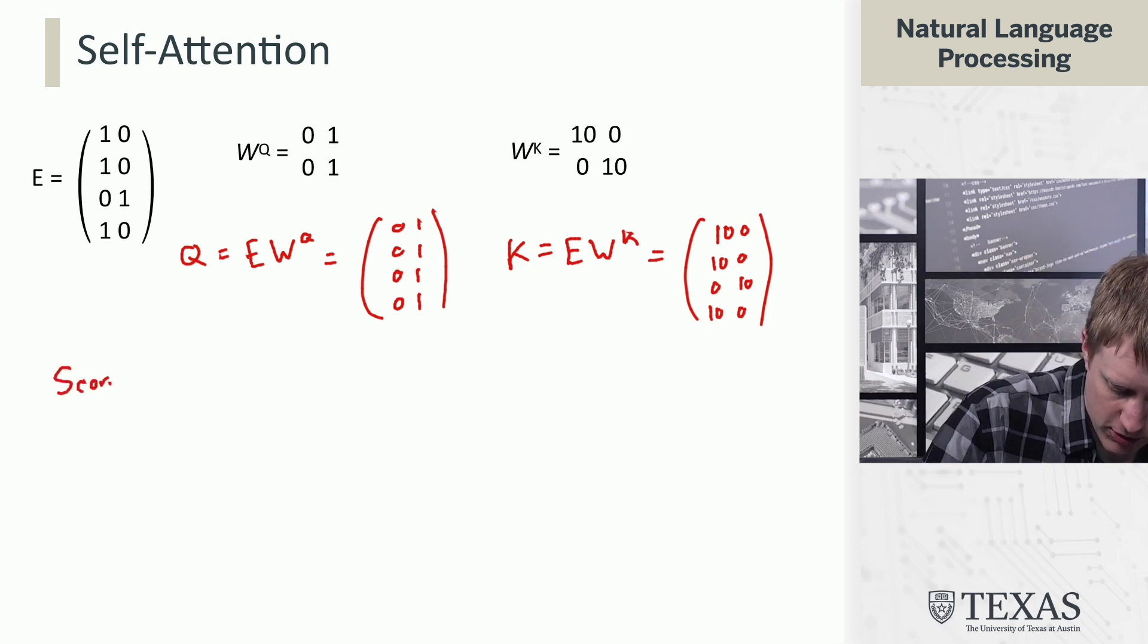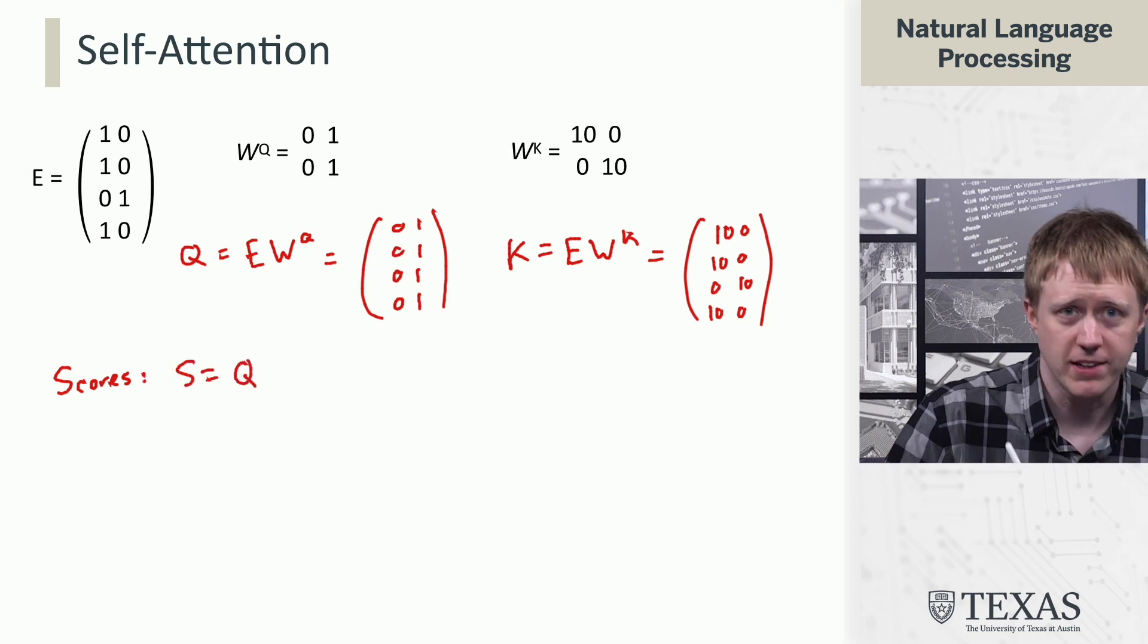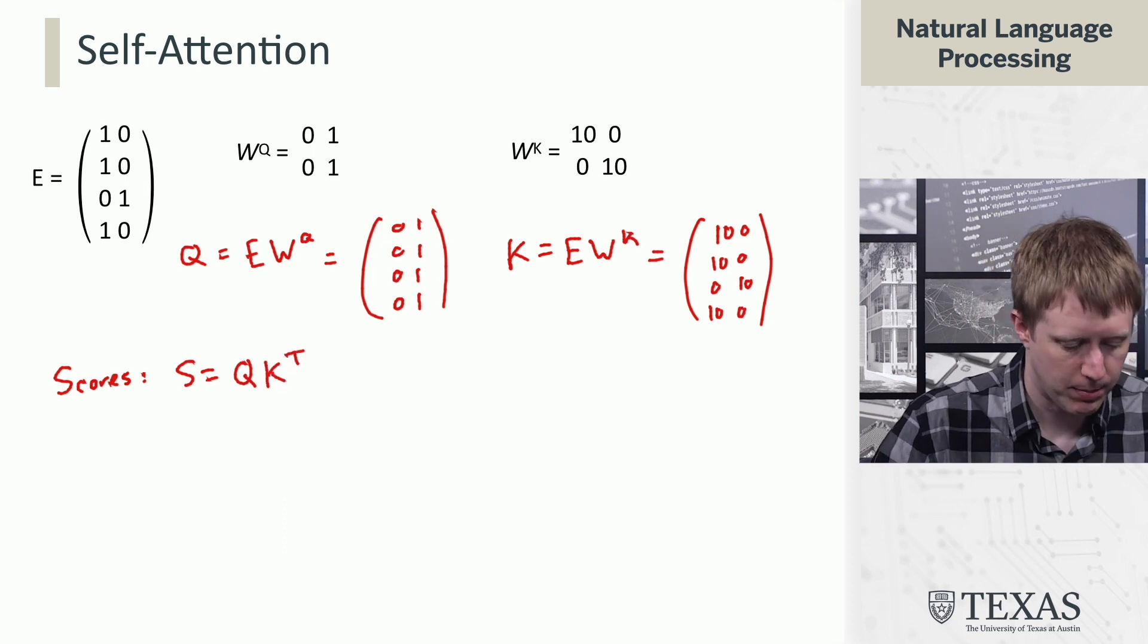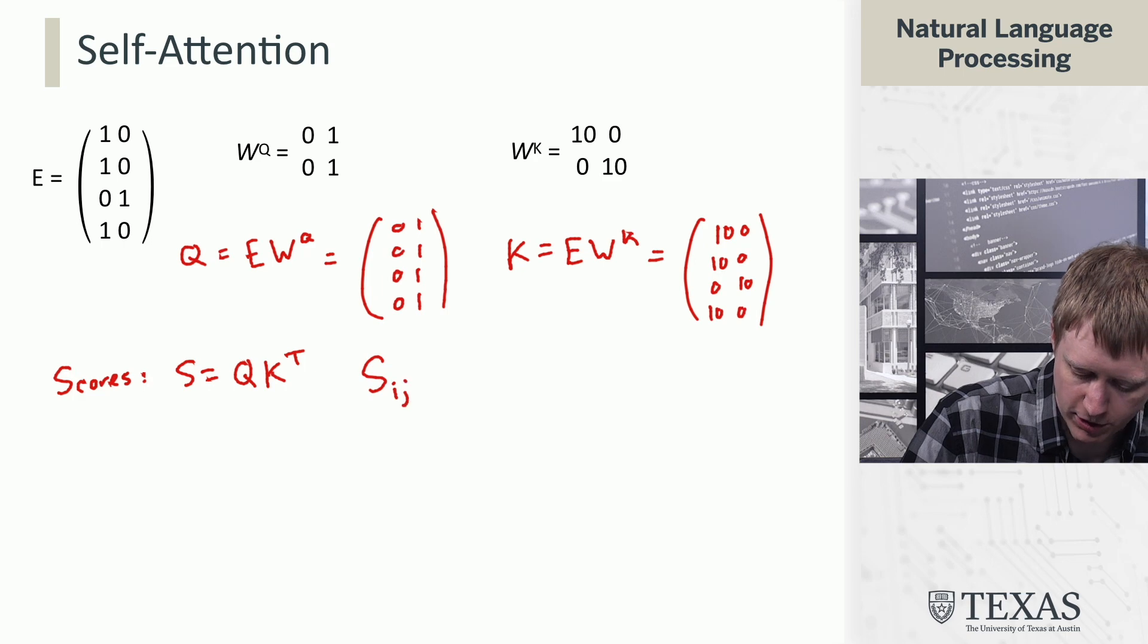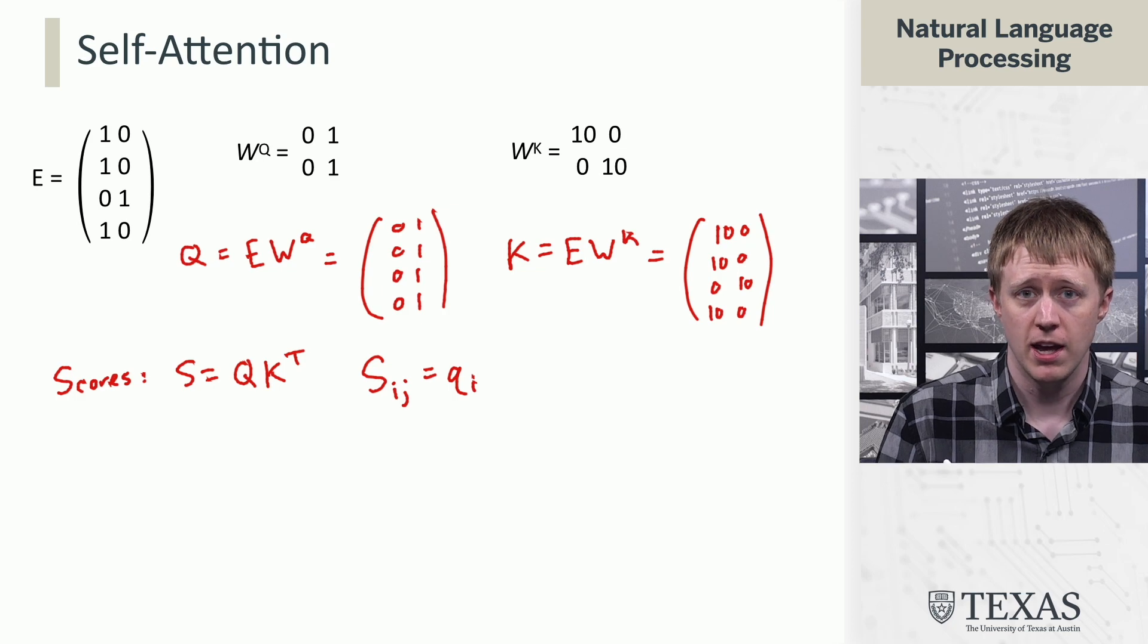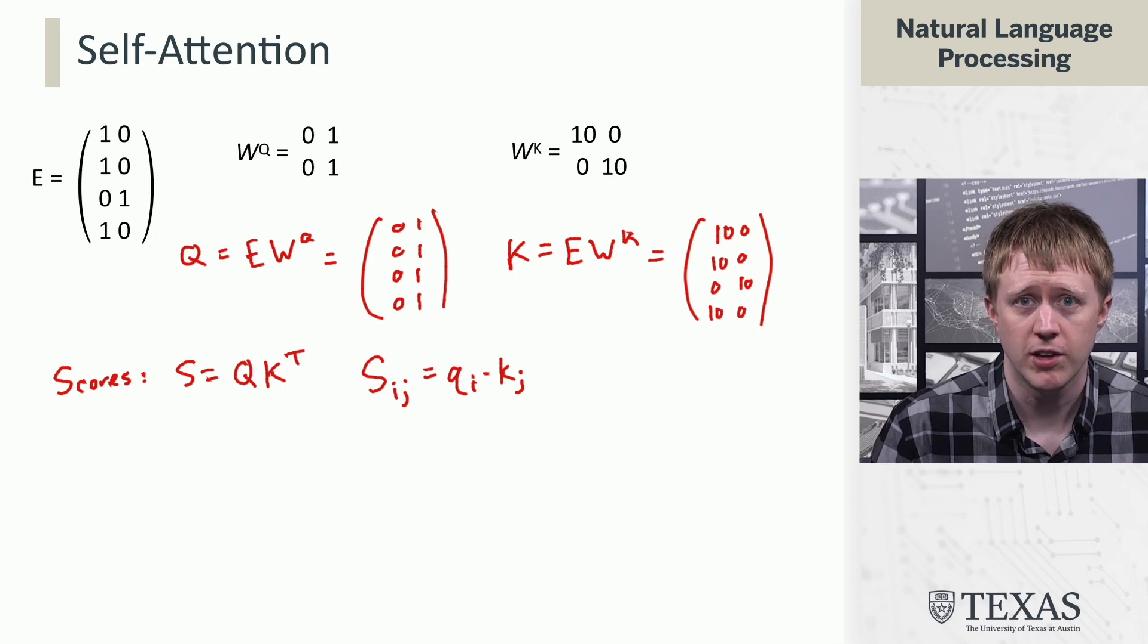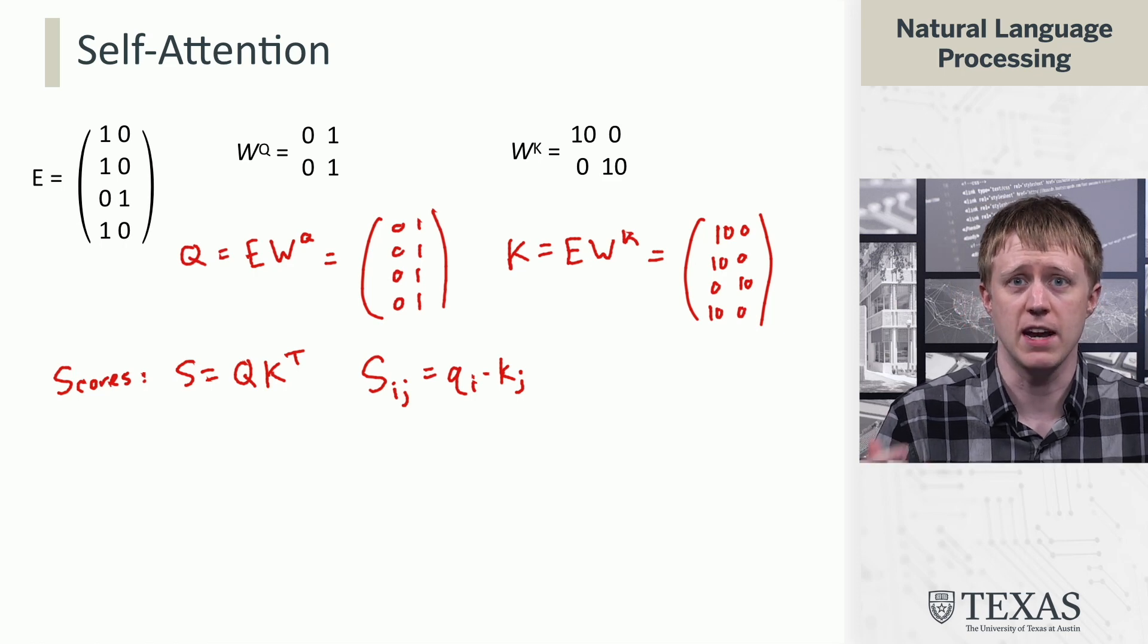Now the scores are going to be computed in the same way that they were before. We're taking an inner product between the queries and the keys, but now we're doing it by just multiplying these matrices together. If we break it down in terms of an individual component, the i-jth value of this S matrix is going to be Q_i dotted with K_j, essentially measuring the compatibility or similarity of the i-th query and the j-th key.